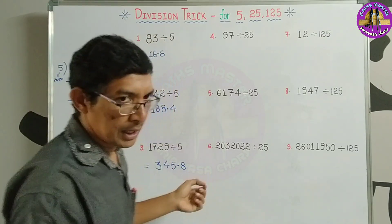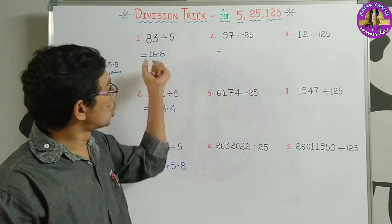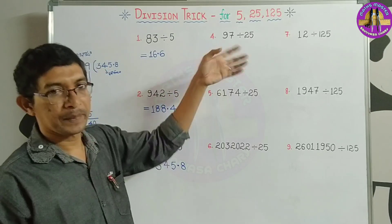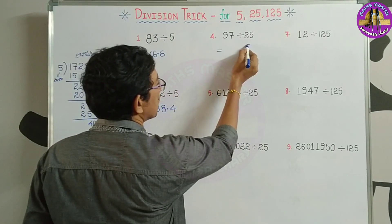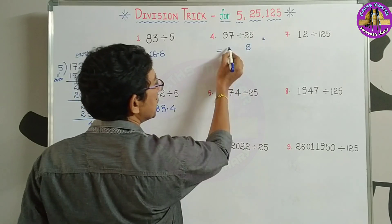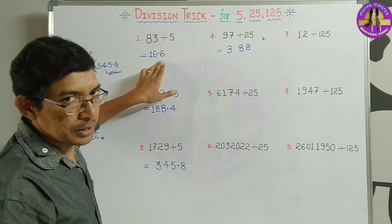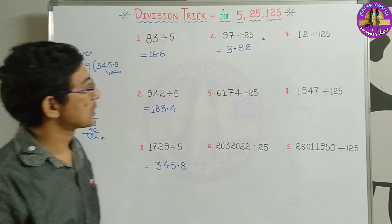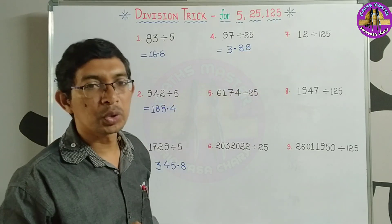If we do 25, we double and multiply by 2. If we do 25, we do 4 and multiply 4 times. 4 times 7 are 28. 4 times 9 are 36 plus 2. If we do 5 times, we will multiply by 2. For 25, the last two digits are the decimal point. So what is the answer? 3.88. For 25, keep decimal point after 2 digits.